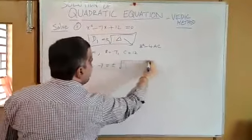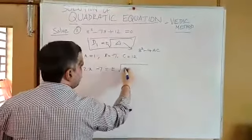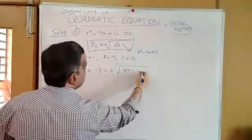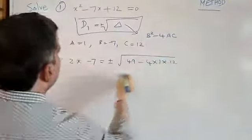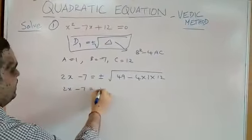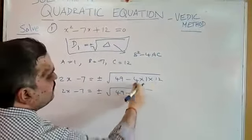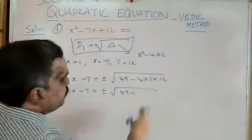You take b square. Minus 7 square: 49. Minus 4 into 1 into c is equal to 12. So, 2x minus 7, plus or minus 49. Multiplication of 4 into 1 into 12: 48.